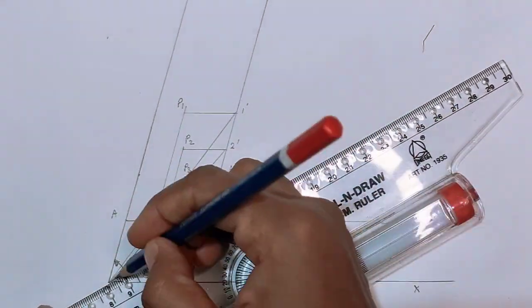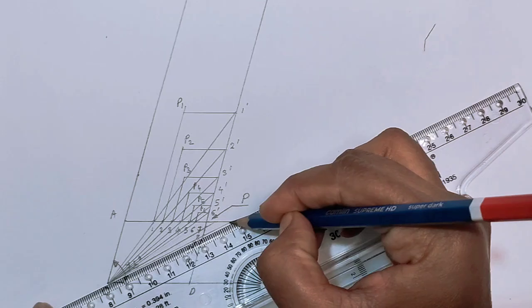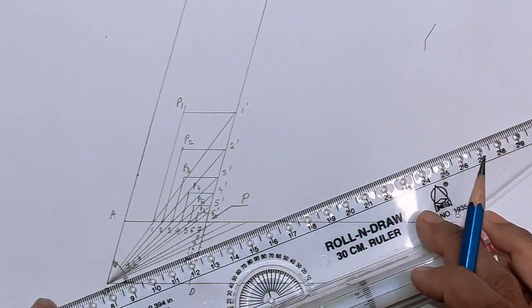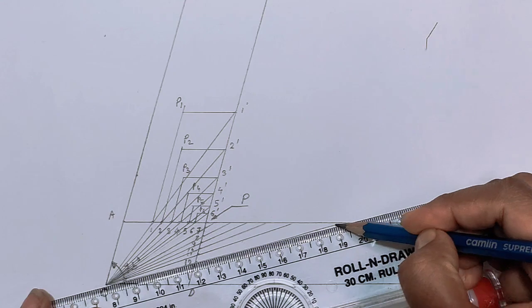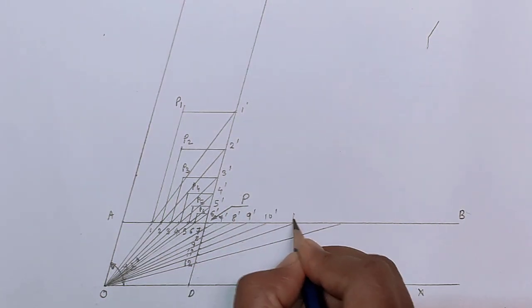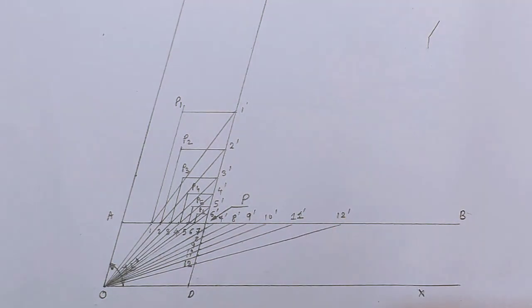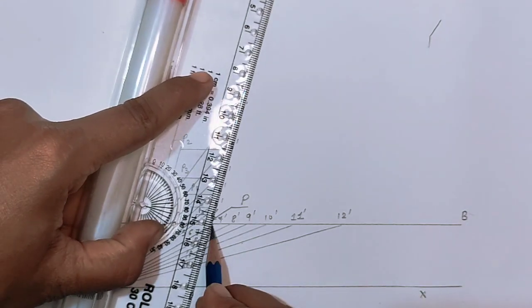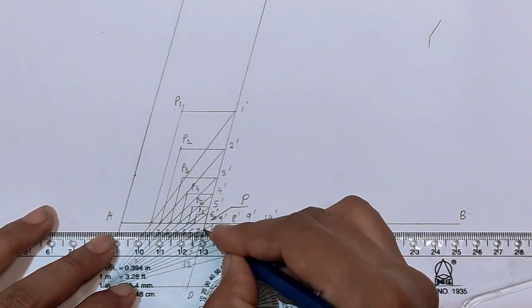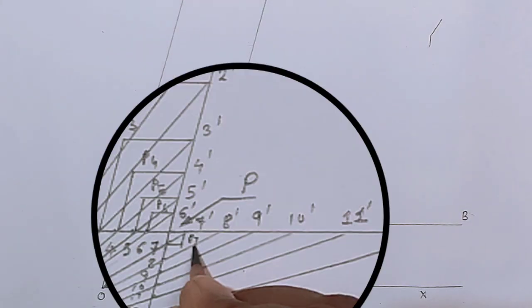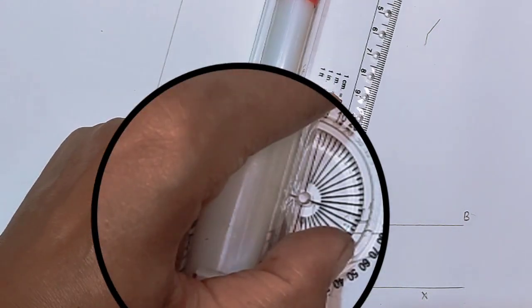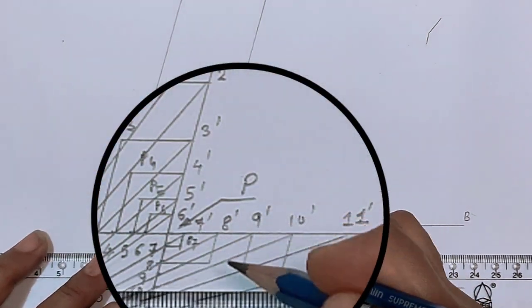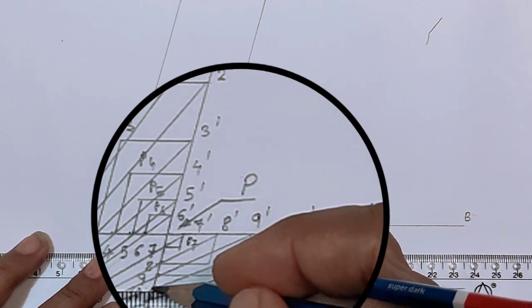Next step, draw a line passing through O7 and extend up to AB, and repeat the same procedure for remaining points.